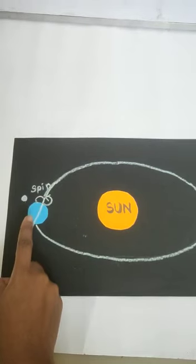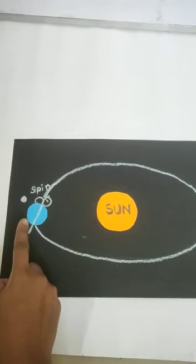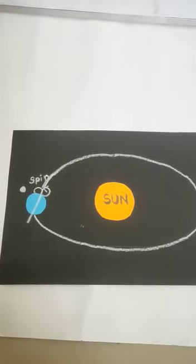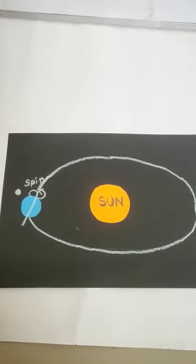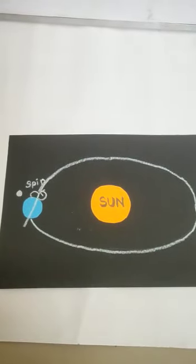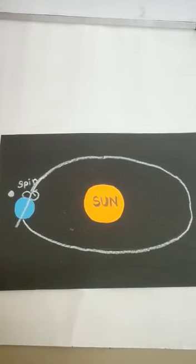Movements of the Earth: the Earth rotates on its own axis from west to east. The Earth tilts on its own axis. It takes 24 hours to complete one rotation, which causes day and night. Revolution means the Earth revolves around the sun. It takes 365 and a quarter days to complete one revolution, which causes different seasons.